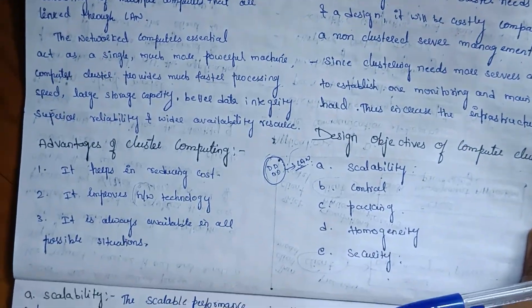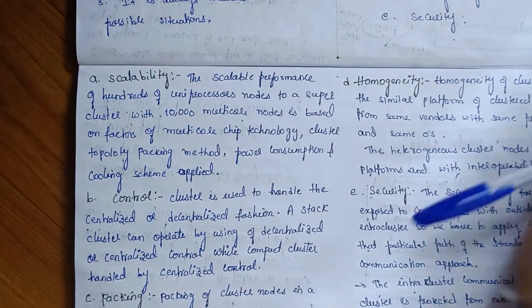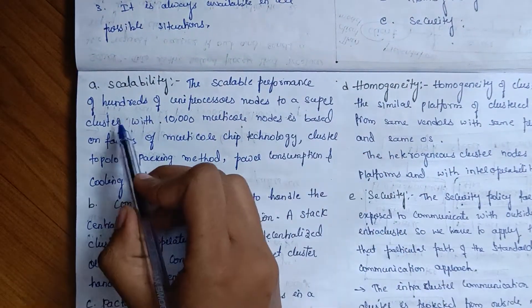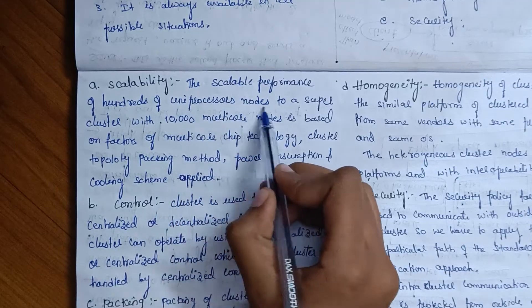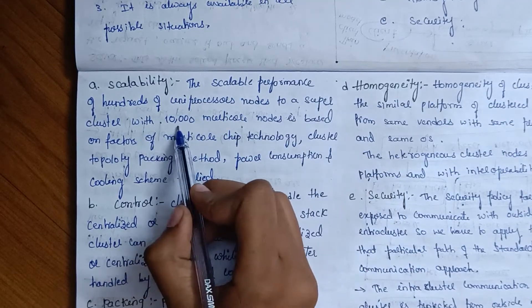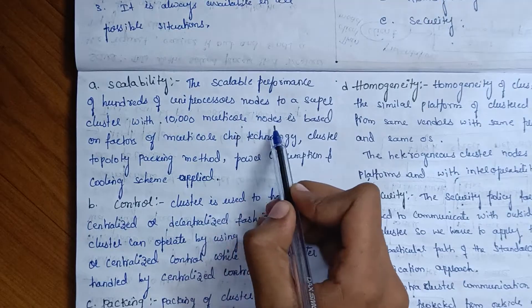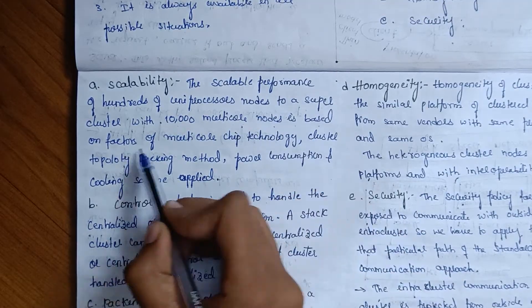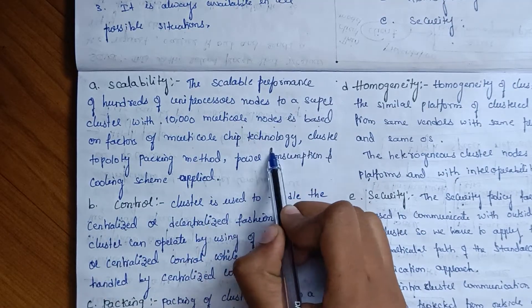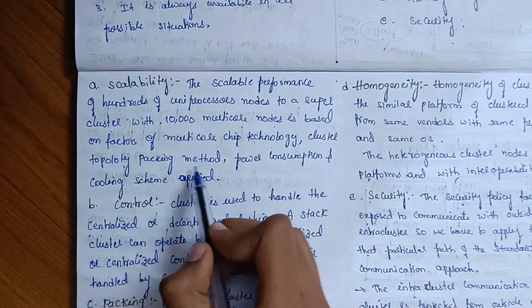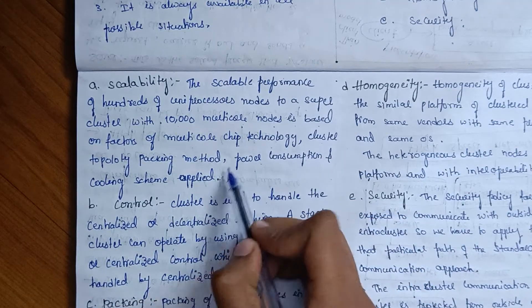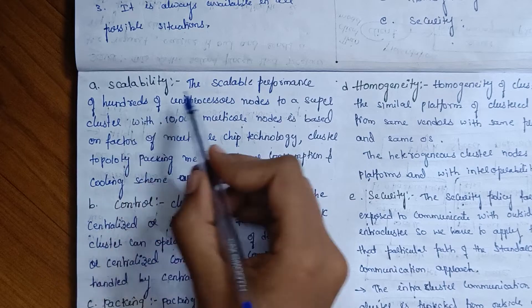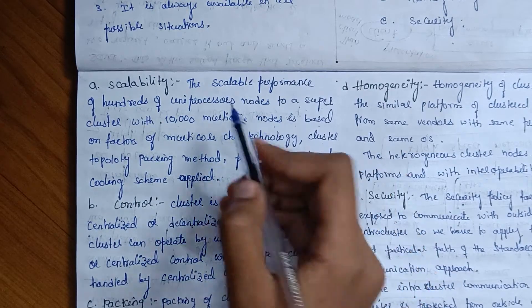Scalability refers to the ability to scale performance from hundreds of uniprocessors up to a super cluster with 1000 multicore nodes. This is based on factors such as multicore chip technology, cluster topology packing method, power consumption, and cooling schemes applied.